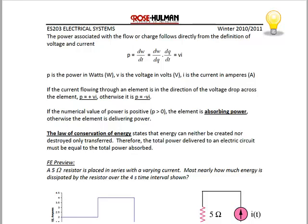Power associated with the flow of charge follows directly from the definition of voltage and current. Recall that P equals dw/dt, voltage equals dw/dq, and current equals dq/dt. Therefore, when you multiply voltage and current together, you get power. So the most common definition we will use for power is v times i, which means that watts equals volt-amperes.